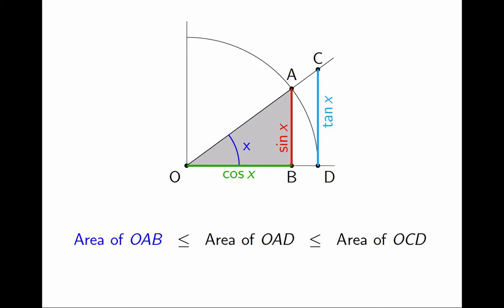First, the smaller triangle OAB. Its area is base times height divided by 2. In this case, that is 1/2 of cos(x) times sin(x).